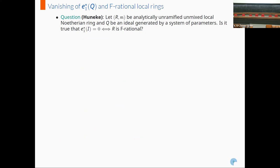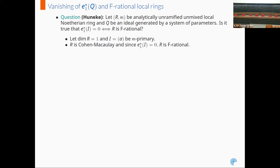He asked: let R, M be an analytically unramified unmixed local Noetherian ring and Q be an ideal generated by a system of parameters. Is it true that E1-star of I is equal to zero if and only if R is F-rational? In dimension 1 we have a positive answer — in fact it turns out to be regular. Since R is reduced in dimension 1, it is Cohen-Macaulay, and E1-star of I equal to zero forces the ring to be F-rational by the Goel-Mukundan-Verma criterion.